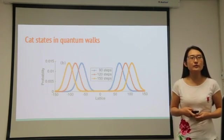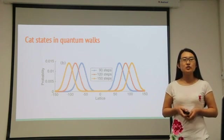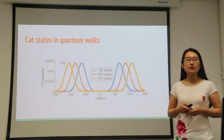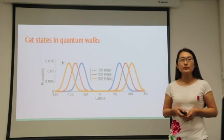In our numerical calculations, we find that if we start with a delocalized initial state which has a Gaussian probability distribution, then there is no residual probability between the two peaks.